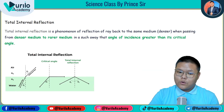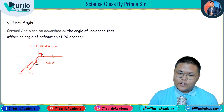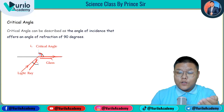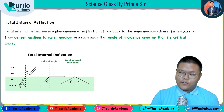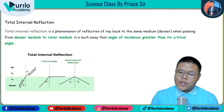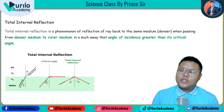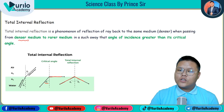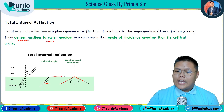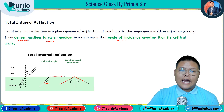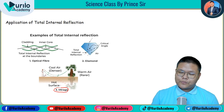When the angle of incidence exceeds the critical angle, total internal reflection occurs — the light is reflected back into the denser medium. This condition always occurs from denser to rarer medium, and the angle of incidence must be greater than the critical angle. This phenomenon is seen in mirages, optical fibers, and diamonds.